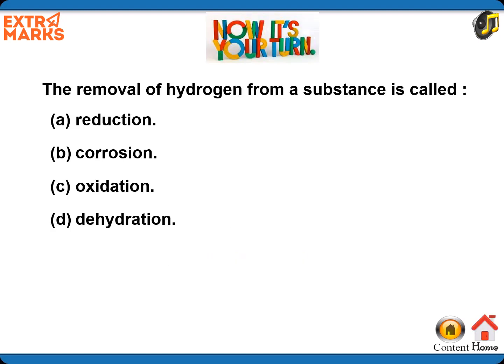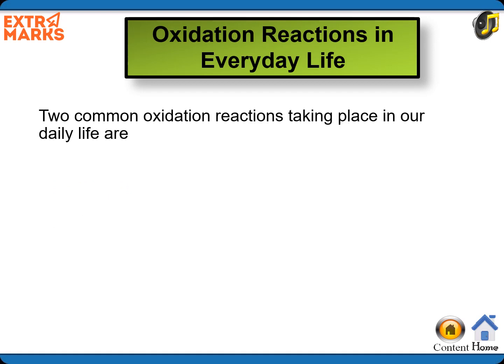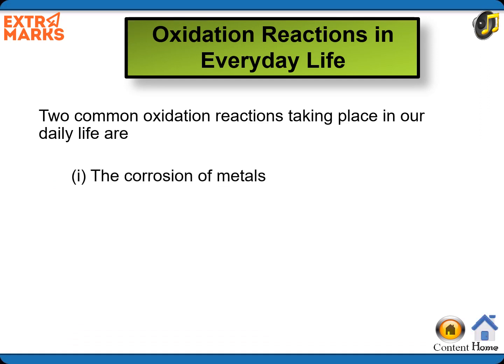Can you give the name of the process in which removal of hydrogen from a substance takes place? Your options are reduction, corrosion, oxidation, and dehydration. The correct answer is oxidation. Two common oxidation reactions in daily life are the corrosion of metals and the rancidity of food.